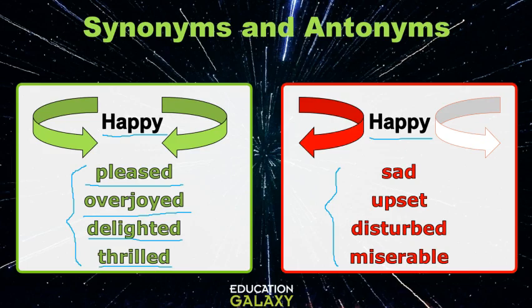Now, these different antonyms also express various levels of being unhappy. For example, sad is the basic unhappy; upset is sadness mixed with disappointment; disturbed is when the person is visibly unhappy; and miserable is just intensely unhappy. So instead of using very unhappy or very sad, you could use any of these other terms.